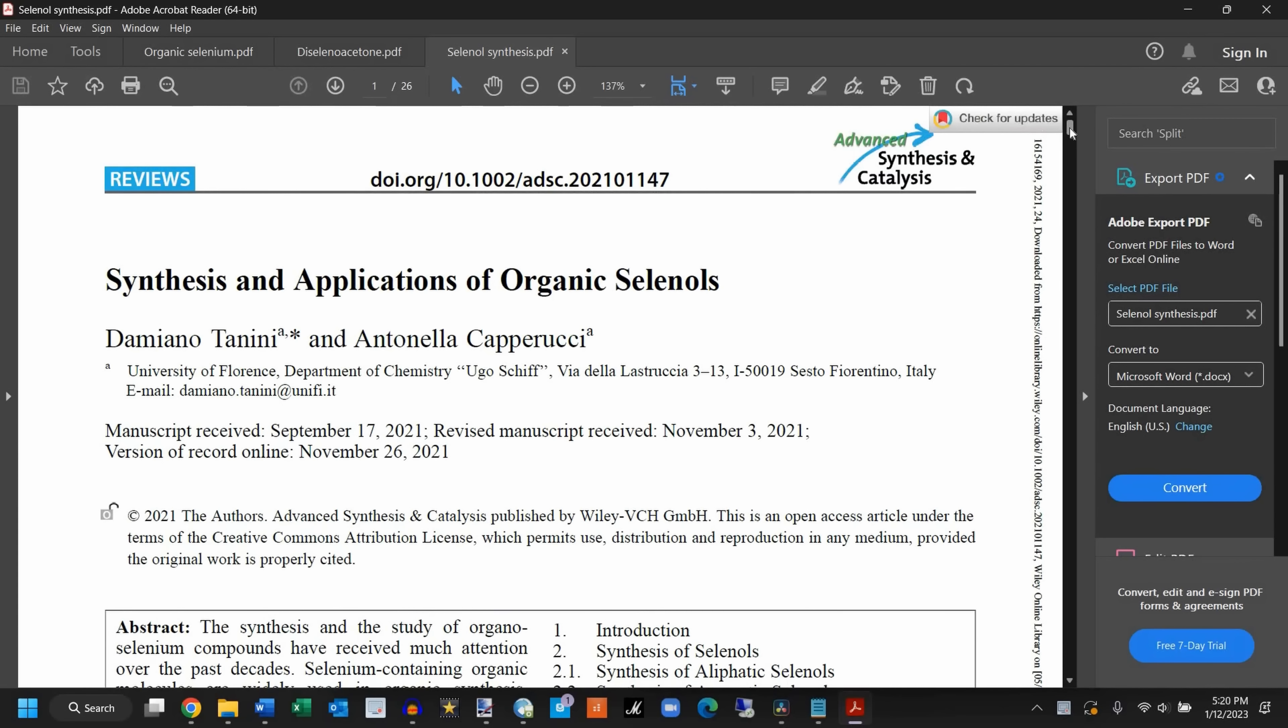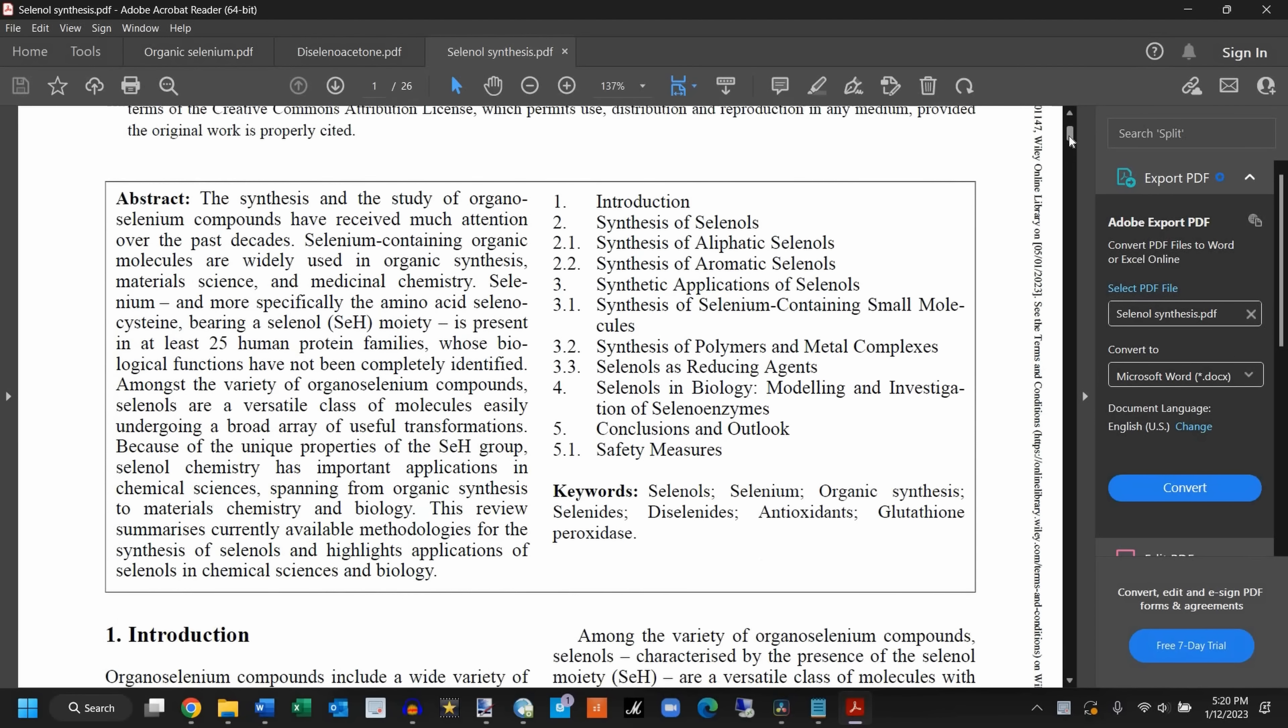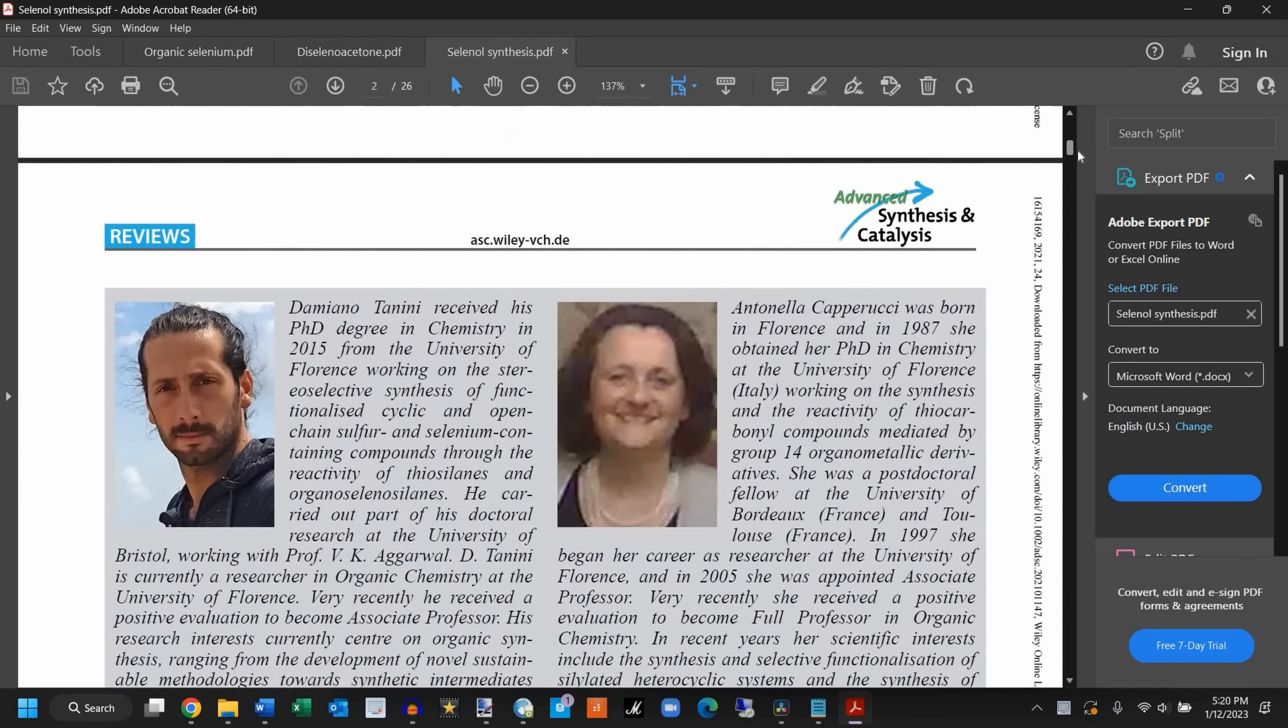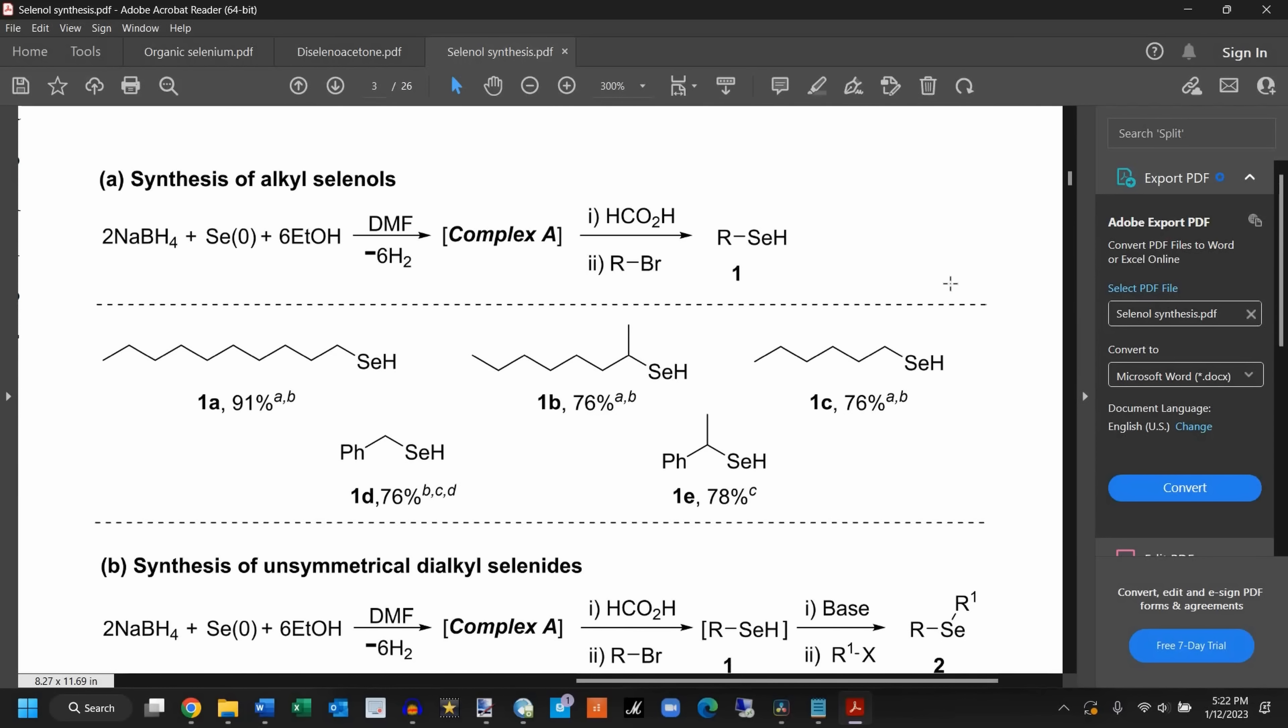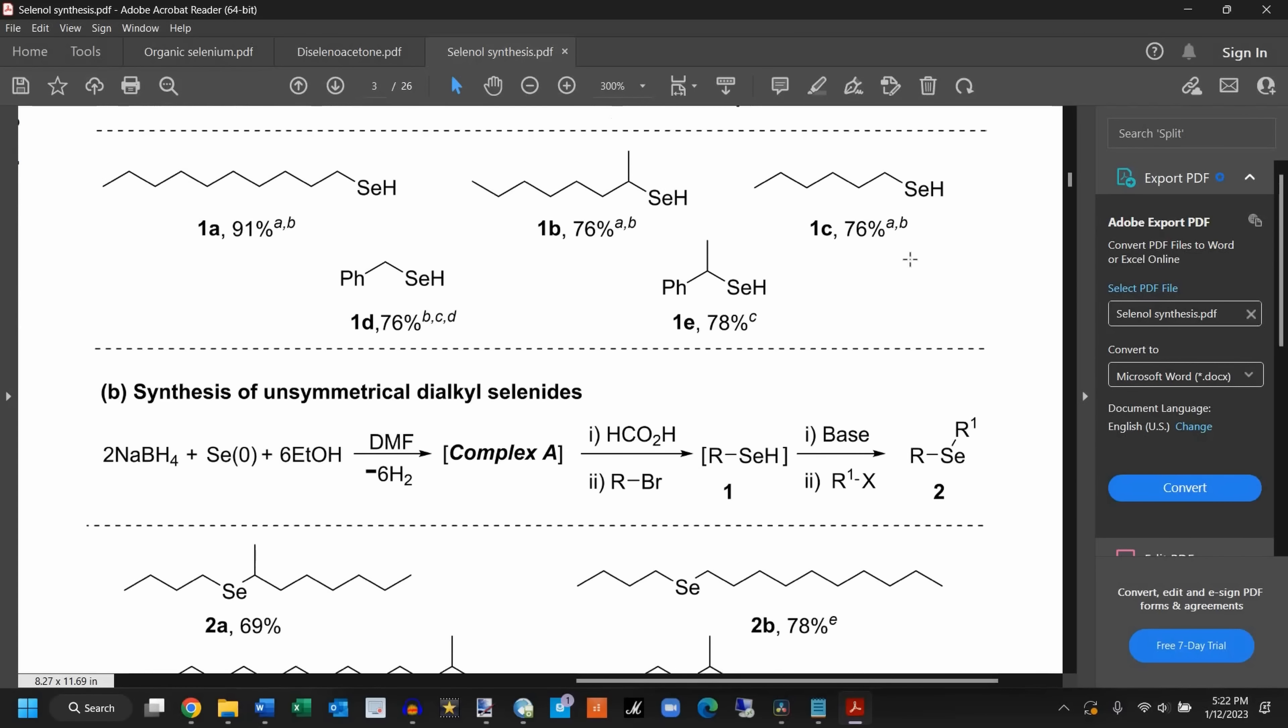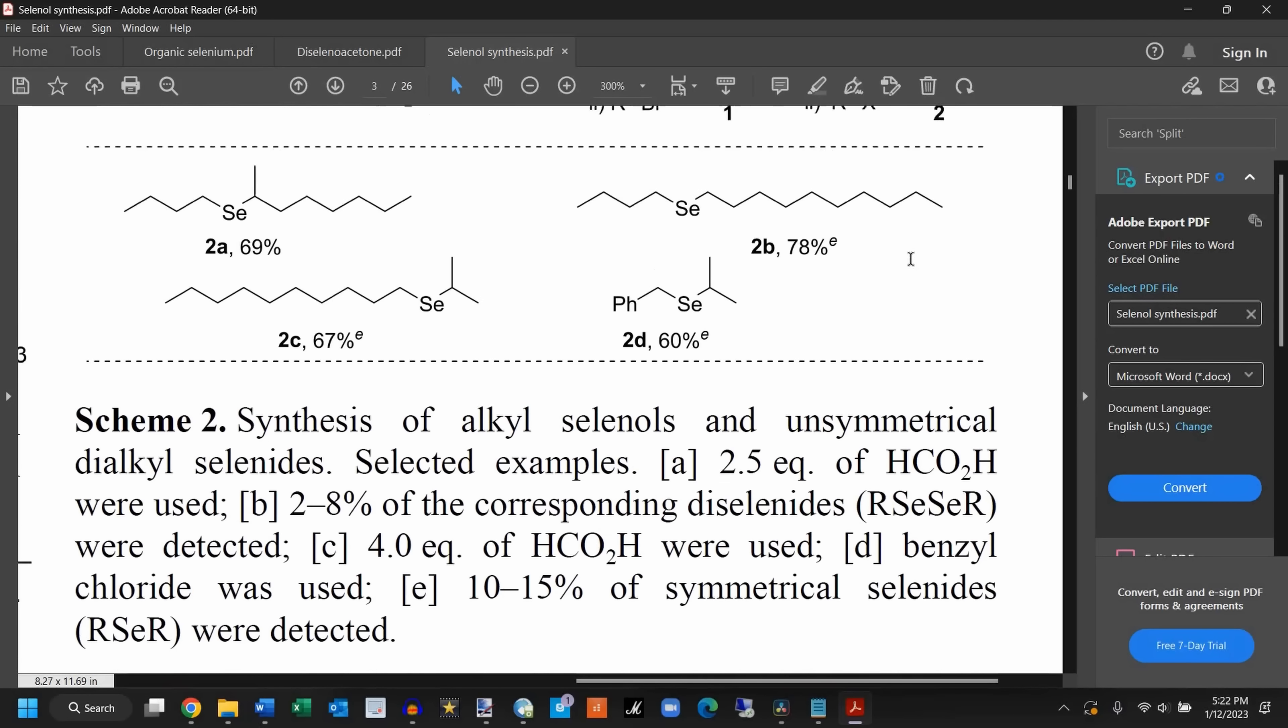To synthesize my selenols, I followed the procedure detailed by this paper, which was written fairly recently in late 2021. Basically, it entails mixing elemental selenium with sodium borohydride in an ice-cold ethanol solution, and then adding an alkyl halide and an acid to get the target selenol, which typically appears as a clear liquid that can be solvent extracted with something like chloroform.